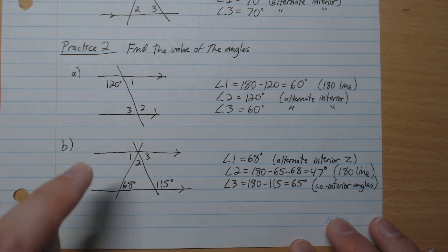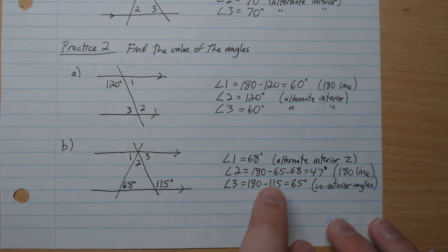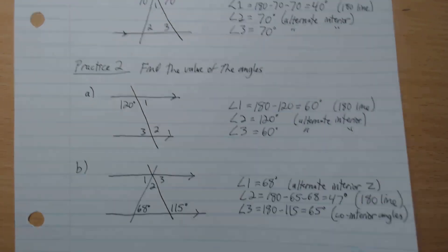So we have angles 1 and 3. And we have 180 on the line. So 180 minus angle 1 and minus angle 3 gives angle 2, which gives 47 degrees.